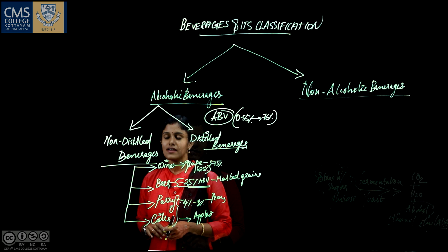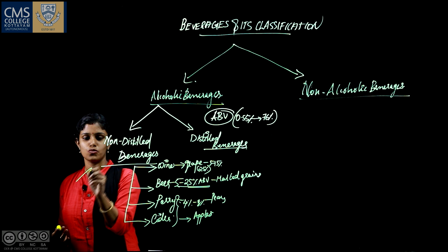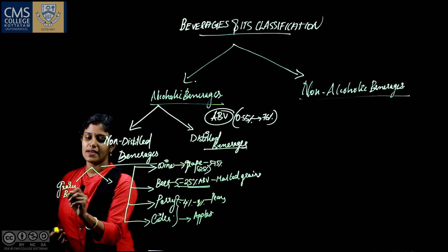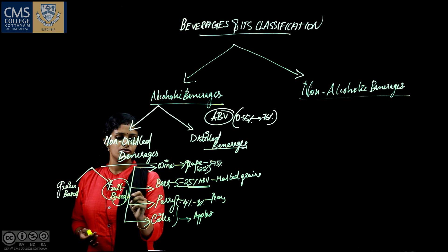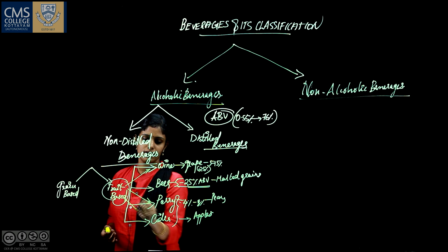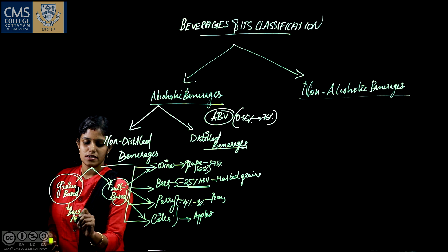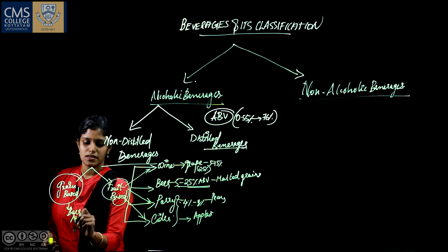Based on the substrate used, these non-distilled beverages can be categorized into two groups: grain-based and fruit-based. The fruit-based beverages are wine, perry, and cider. The grain-based beverage is beer, which is prepared from malted barley.